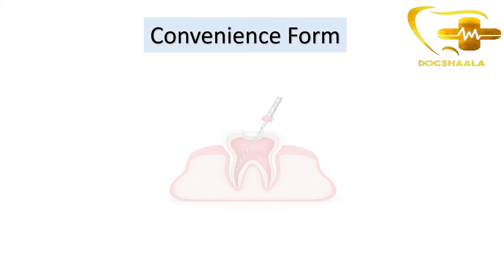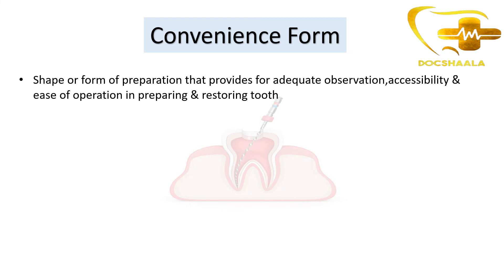Convenience form is nothing but the shape or form of preparation that provides adequate observation, accessibility, and ease of operation in preparing and restoring the tooth. We prepare cavity walls in such a way that we get adequate observation, accessibility, and ease of operation when placing the cement and restorative material.